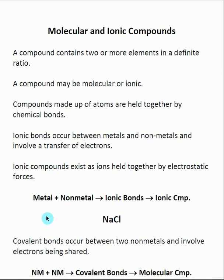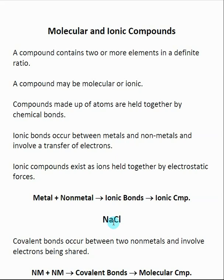So in a compound, if we have a metal and a nonmetal combined, they typically will form ionic bonds — that's what we define as an ionic compound. The classic example is NaCl. Na is on the left-hand side of the periodic table — a metal. Chlorine is on the right-hand side — a nonmetal. So we would expect there to be ionic bonds in NaCl.